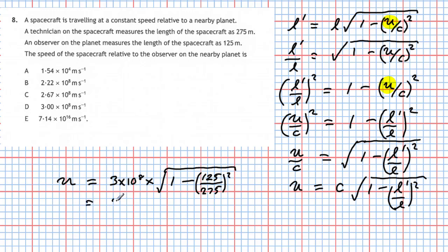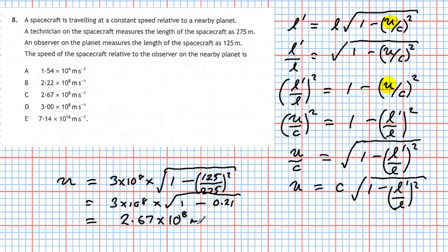L-prime is the relativistic length of 125 metres, divided by l the proper length of 275 metres, and that value must be squared. Doing 125 divided by 275, all squared, gives 0.21 in the calculator. So we have 3 × 10⁸ times the square root of (1 − 0.21), giving a value of 2.67 × 10⁸ metres per second.